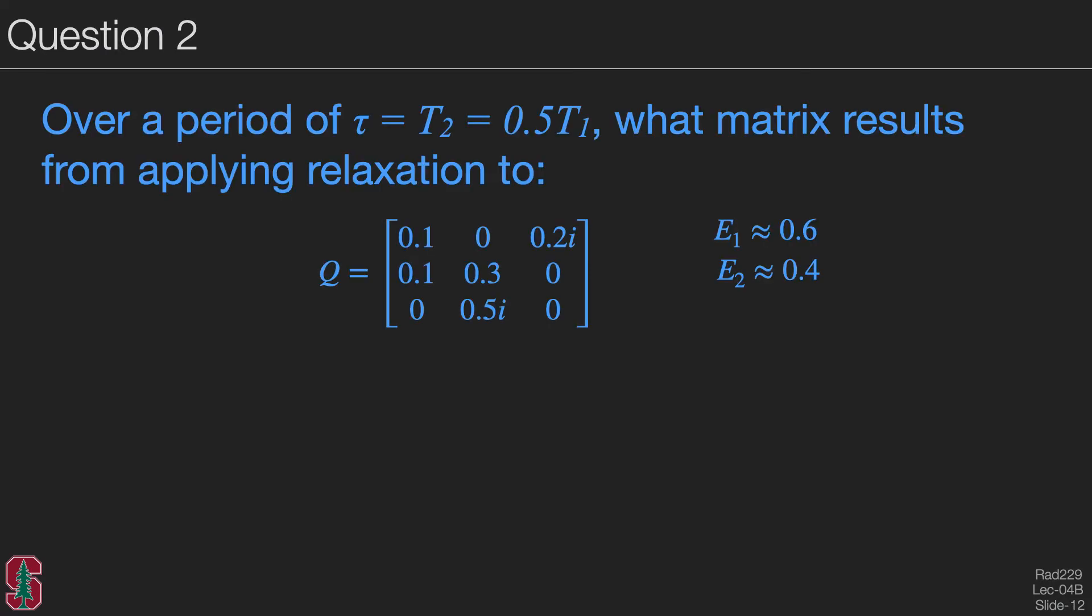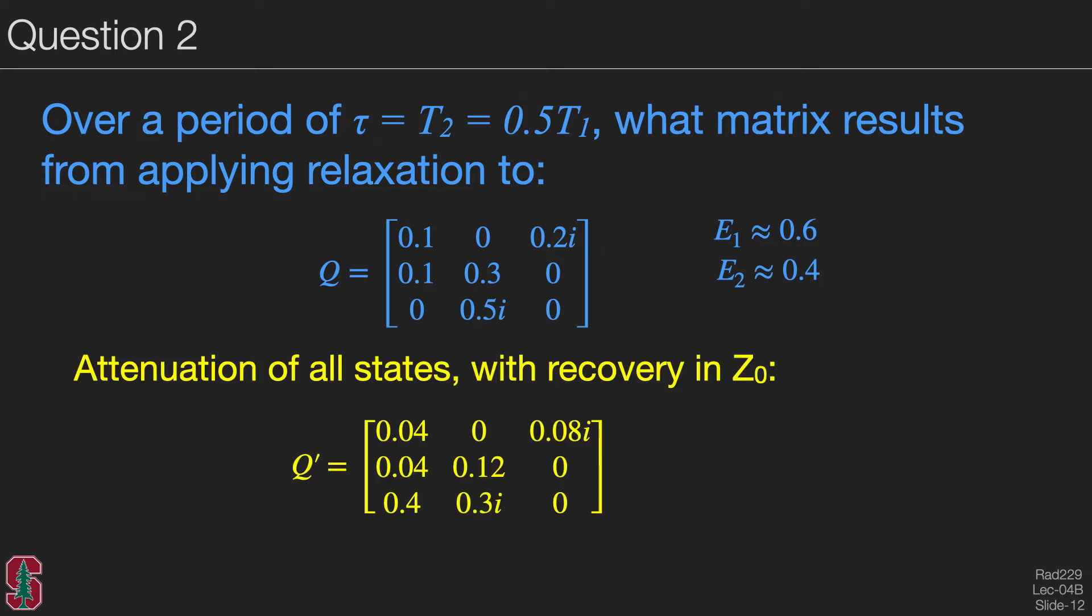So let's look at another review question. Over a period of tau corresponding to one T2 or half a T1, what matrix results from applying relaxation to this matrix of EPG coefficients? And for convenience, we're going to approximate E1 and E2 as shown. So again, we see attenuation of all states. However, we have some recovery in Z zero. So we started with Z zero equal to zero. So the recovery here is towards, back towards equilibrium here. And the other states have all been attenuated according to E2 or E1. And this is the Z zero state where you see this regrowth of magnetization.